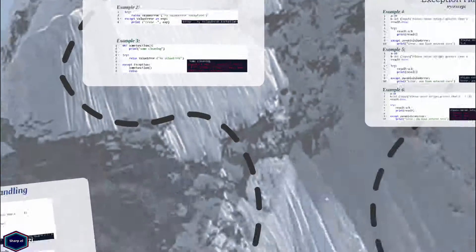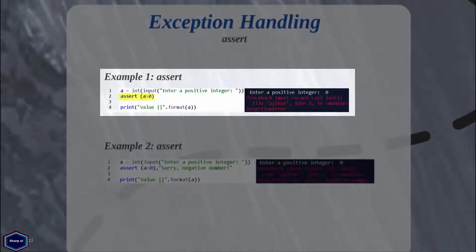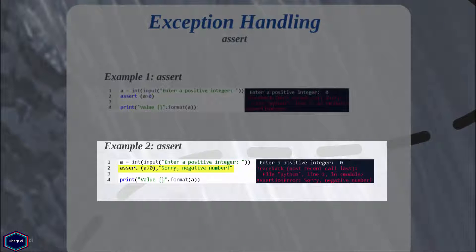Now let's move to the assert statement. The assert statement also exists in many other programming languages like C++ and Java. It evaluates a Python expression and raises an AssertionError exception only if the expression evaluates to boolean false. In this example, if the number entered by the user is greater than zero, the expression becomes true and everything works fine. But if the expression becomes false, Python raises an AssertionError and terminates the program. You can also pass an optional message to the assert statement, which will be printed next to the AssertionError.